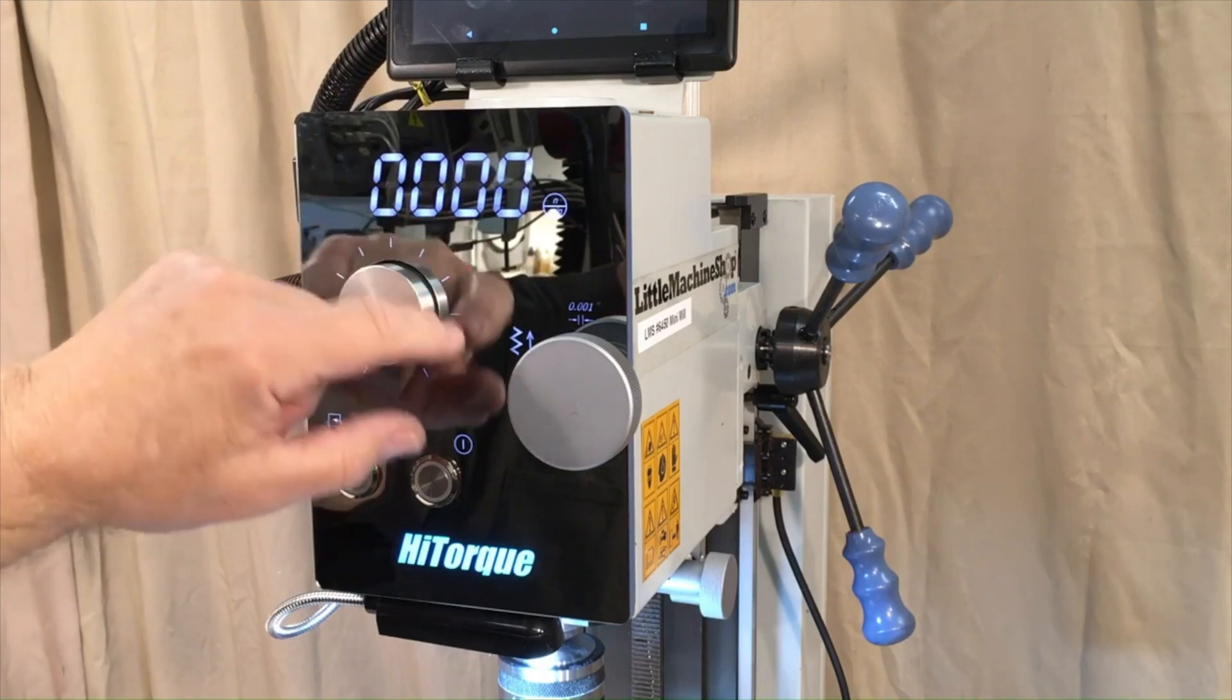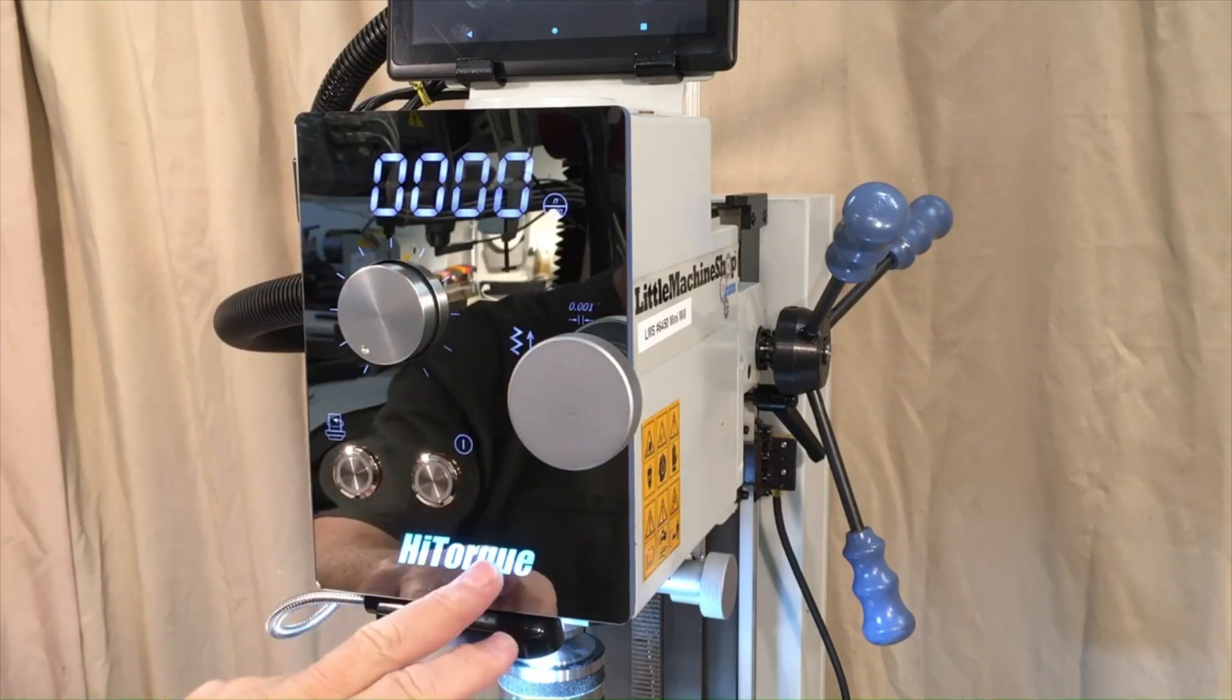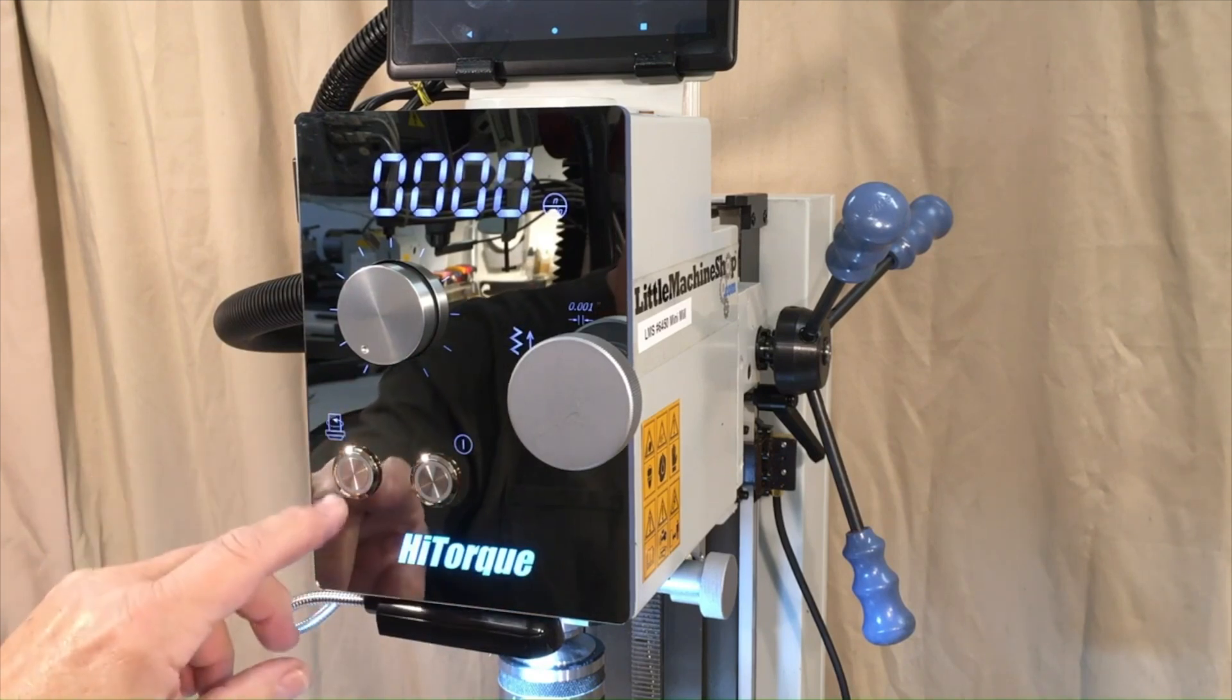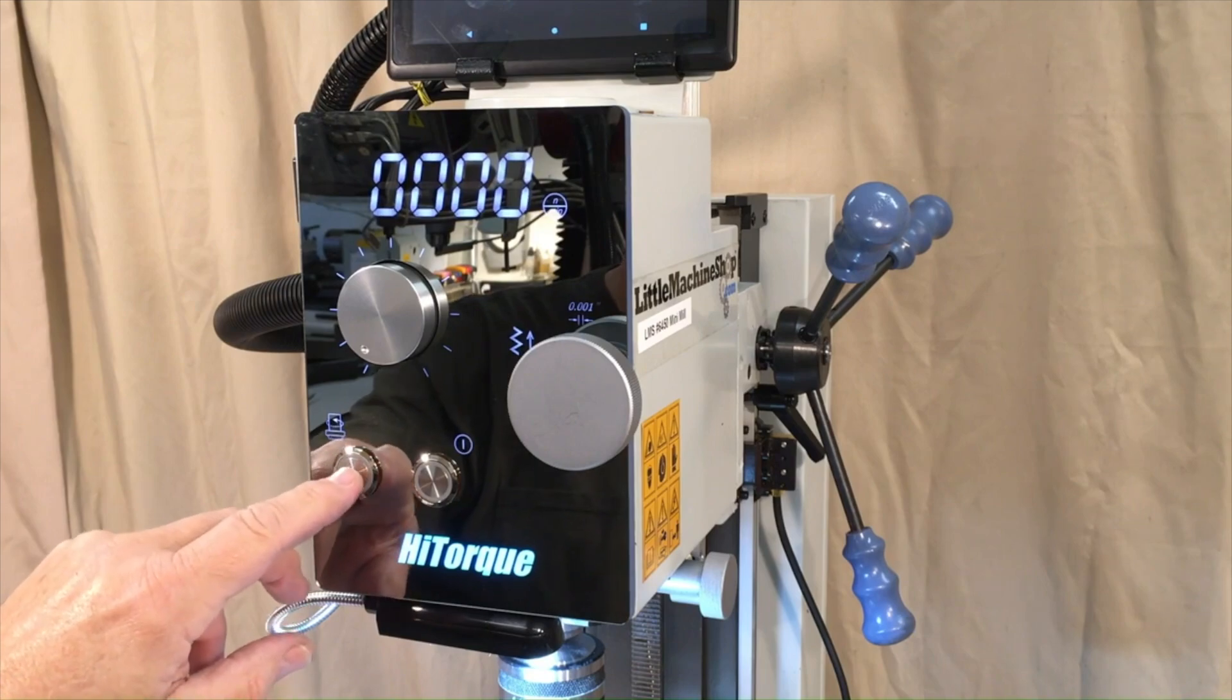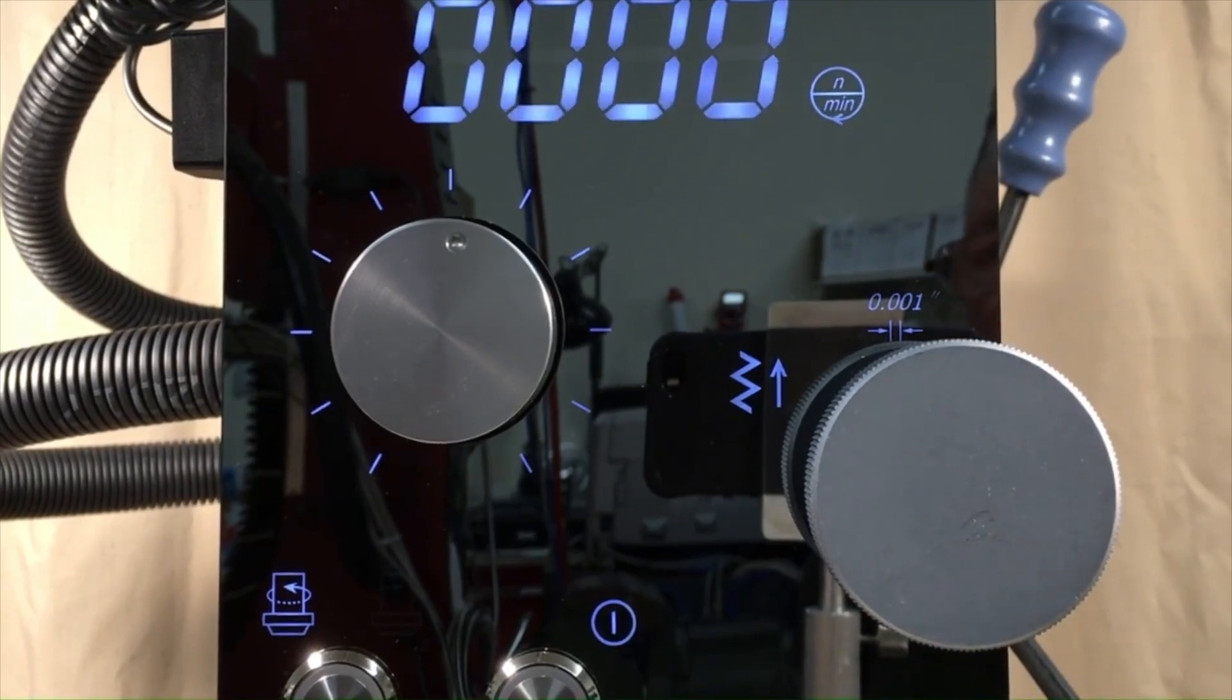You also have illuminated markers for the speed control and some other illuminated markers. One new feature that was not present on the 3990 is this spindle reverse button. Up above the display panel is the digital readout or DRO unit.